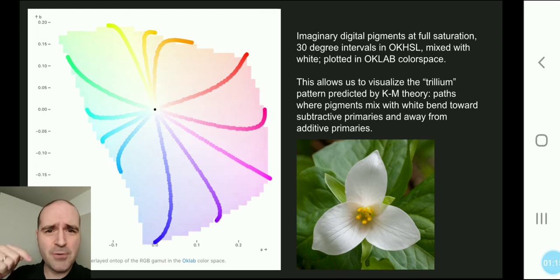Well, you might get something like this. These are all full saturation RGB colors as though they were physical pigments, how they would mix with white. You see it sort of turns into this interesting pattern where those paths bend